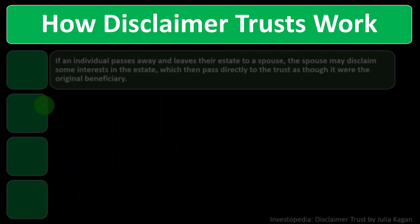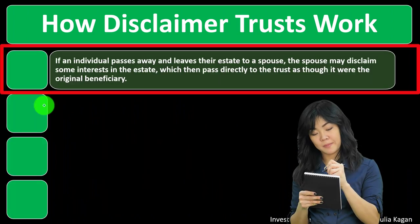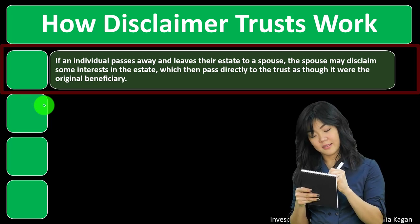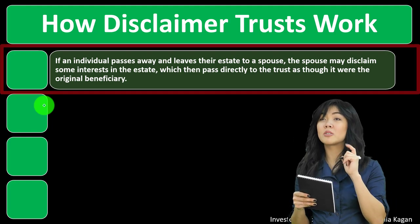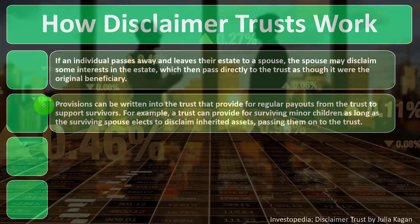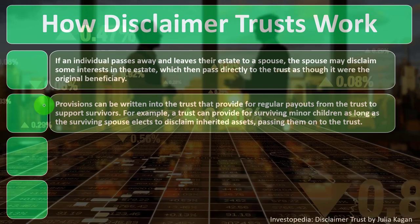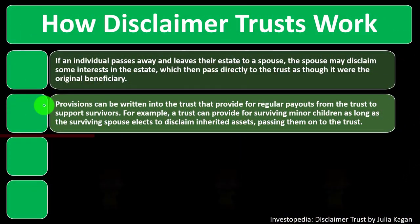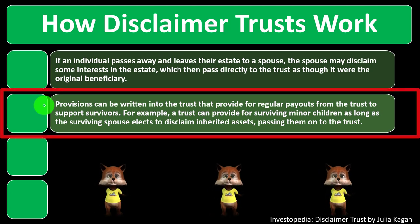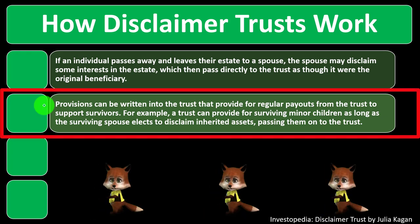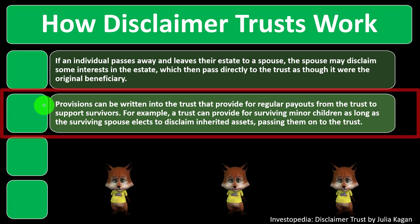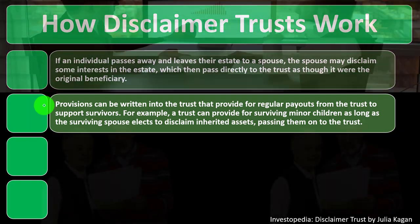How disclaimer trusts work: if an individual passes away and leaves their estate to a spouse, the spouse may disclaim some interest in the estate, which then passes directly to the trust as though it were the original beneficiary. Provisions can be written into the trust that provide for regular payouts from the trust to support survivors — for example, a trust can provide for surviving minor children, as long as the surviving spouse elects to disclaim inherited assets, passing them on to the trust.